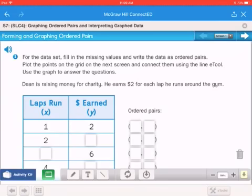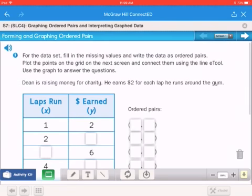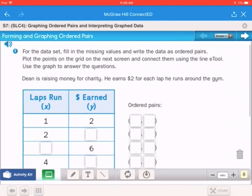This is Math Journal page 139. So for this page it says, for the data set, fill in the missing values and write data as ordered pairs.